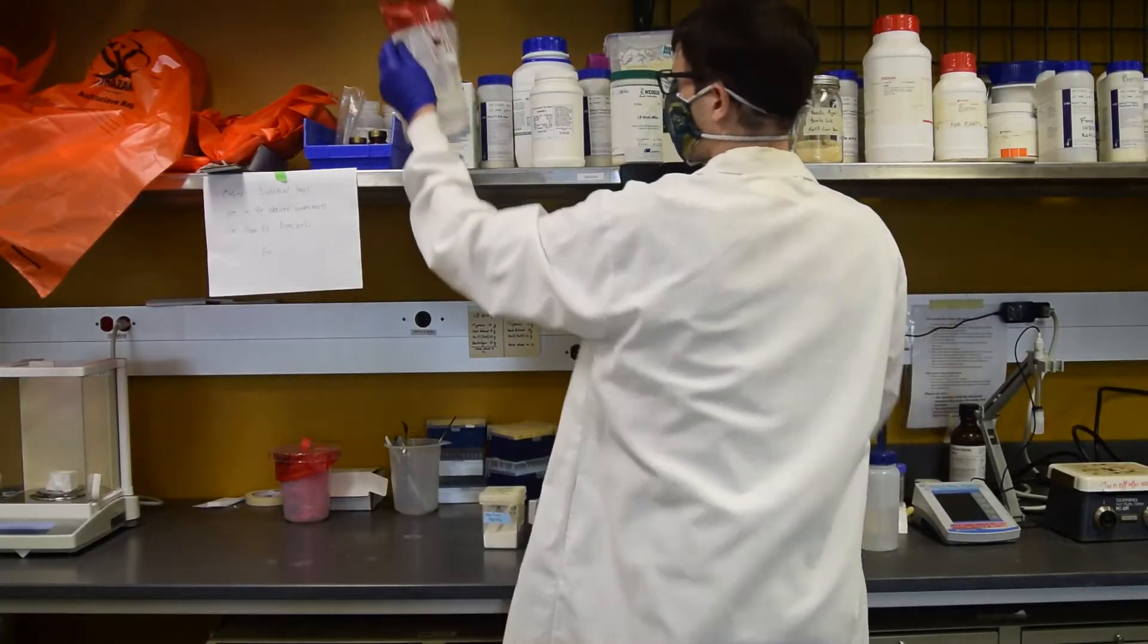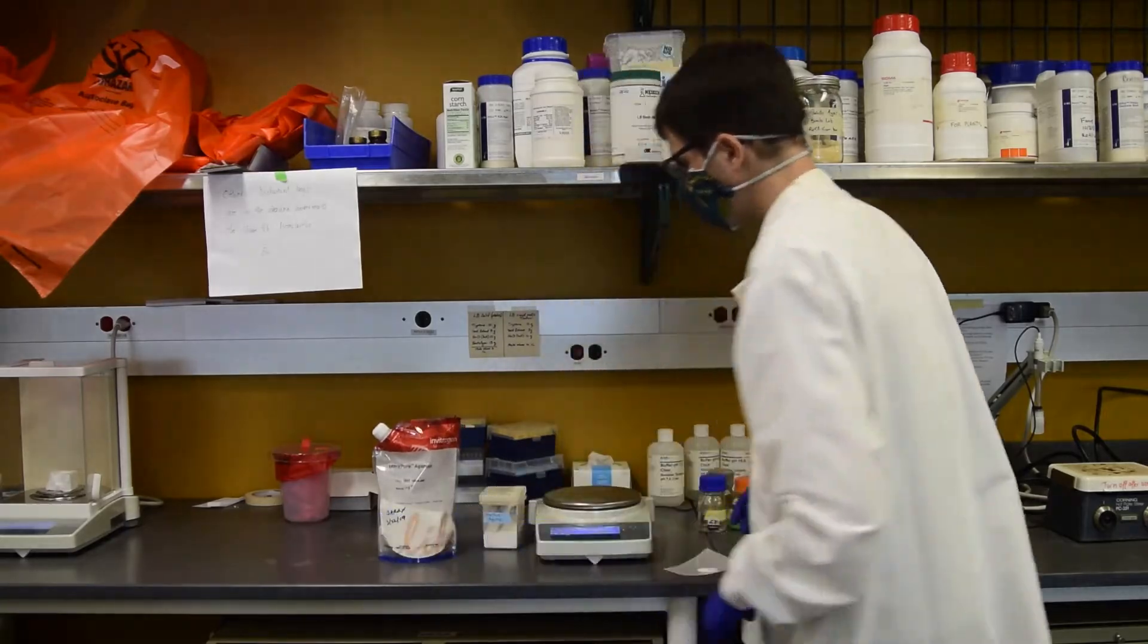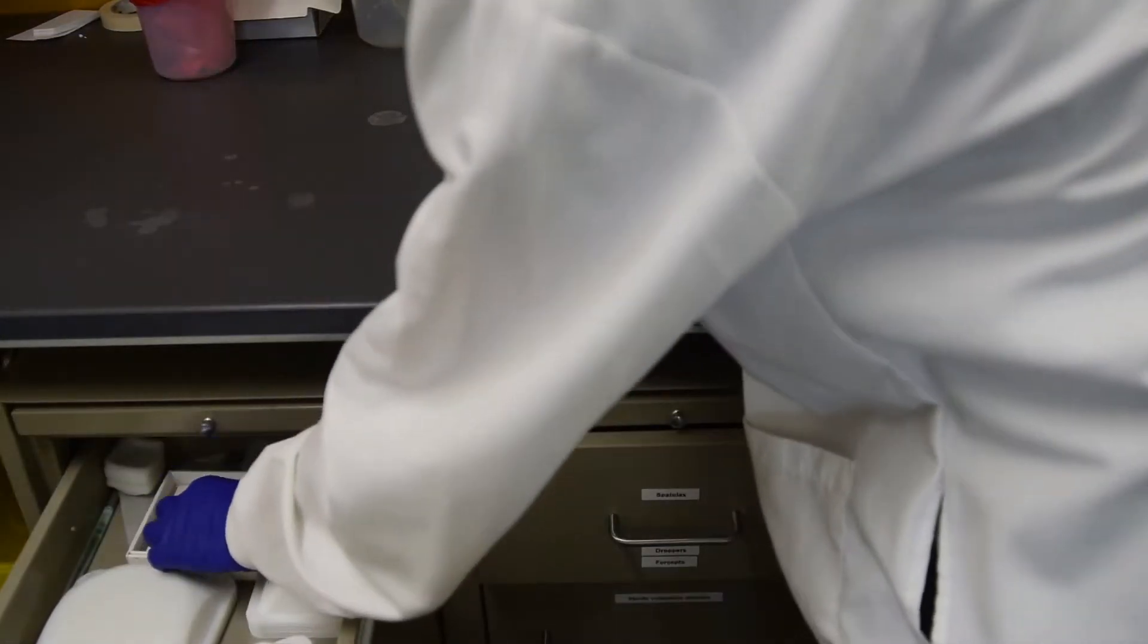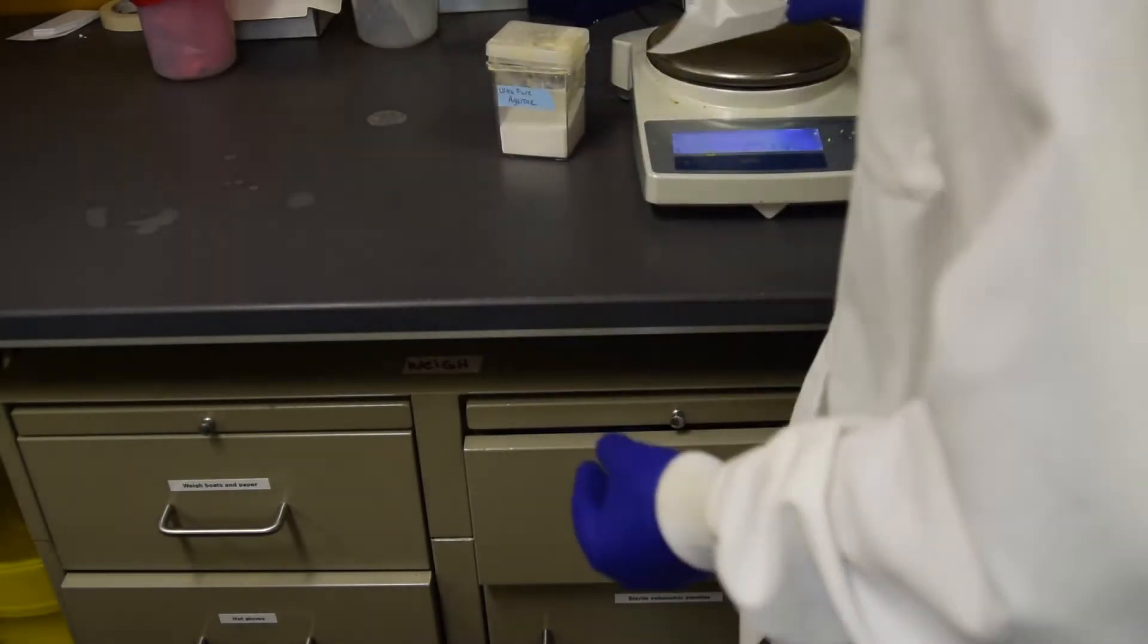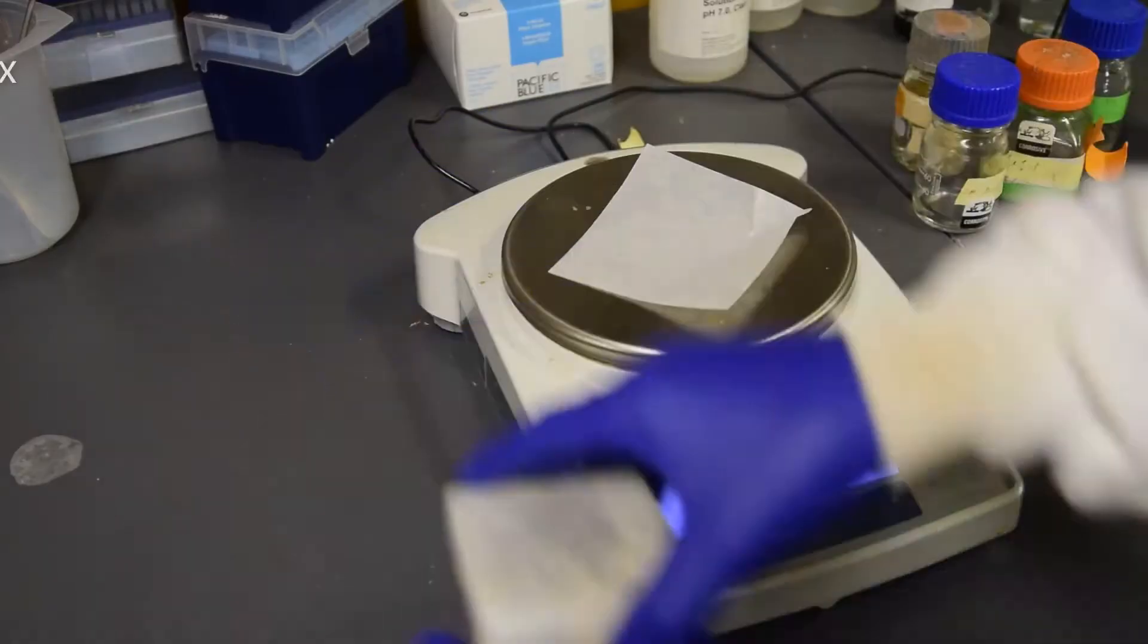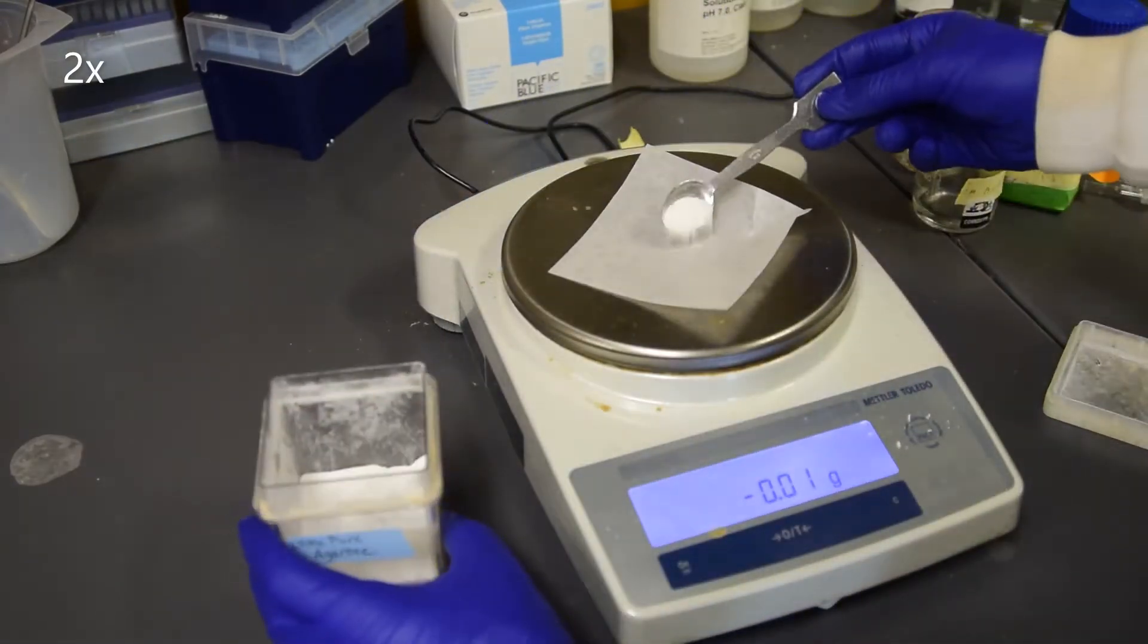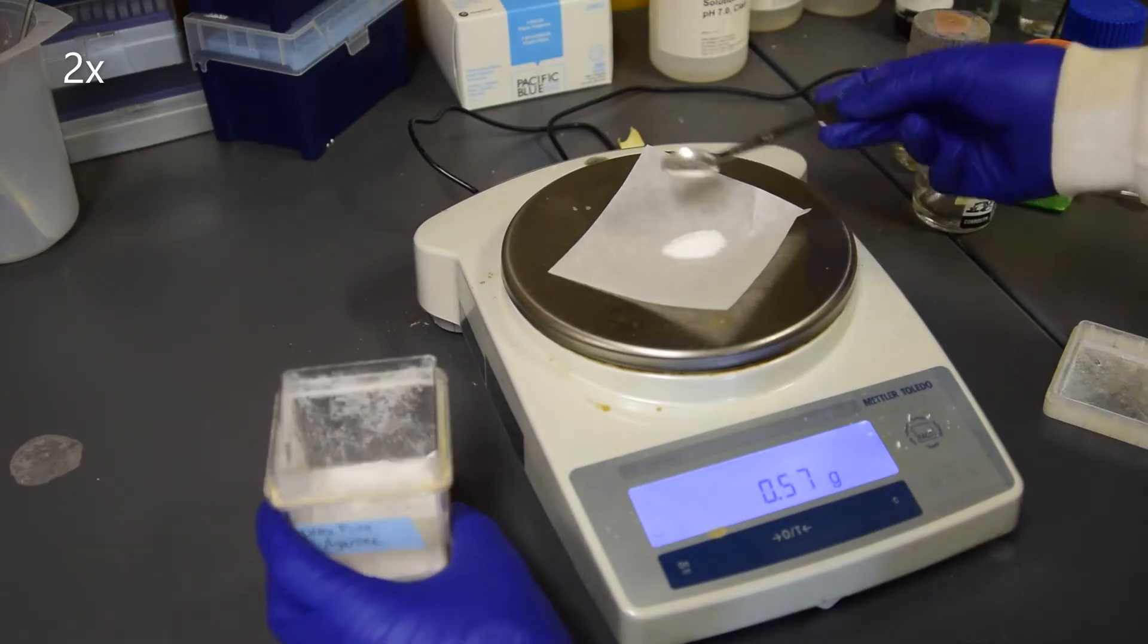We need to measure out agarose to make the gel. Extra agarose can be found in a pouch on the shelf above the balances. Wear a lab coat and gloves in the gel room. I use weighing paper because it's usually an amount less than 1 gram. Weigh out enough agarose for 0.9% of the gel's volume, so here we have 0.45 grams for a 50ml gel.